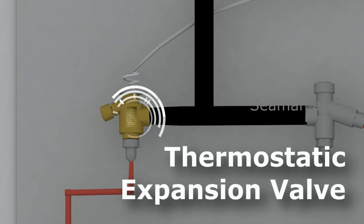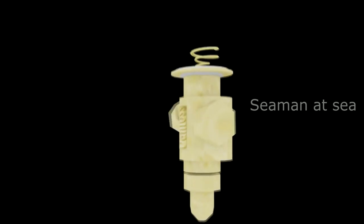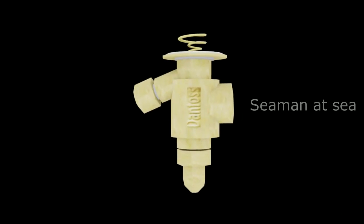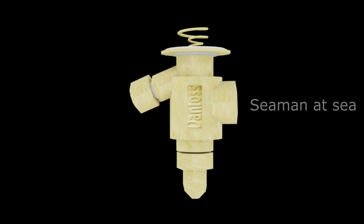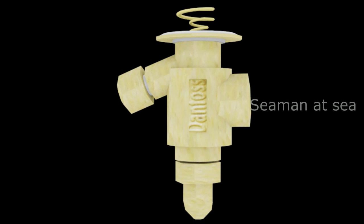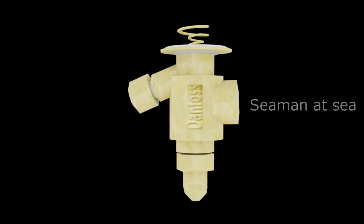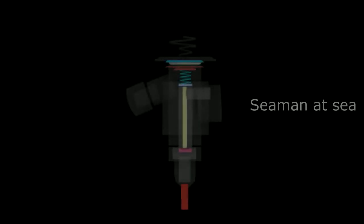Thermostatic Expansion Valve or TEV works based on the expansion of the mercury inside the sensing bulb fixed in close contact with the suction refrigerant line at the outlet from the evaporator and is responsive to change in refrigerant vapor temperature at its point. When the temperature in the refrigerator rises, the mercury inside the sensing bulb will expand.